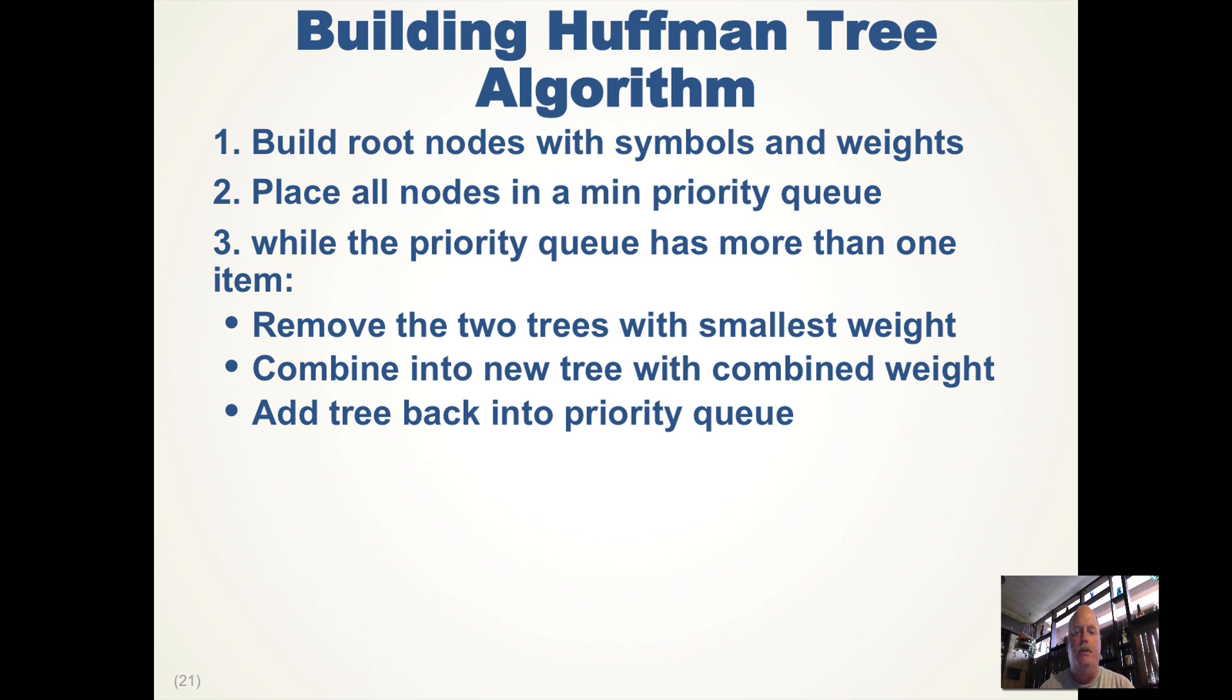Eventually, you get to the point where the priority queue only has one tree in it, and that is the Huffman tree.